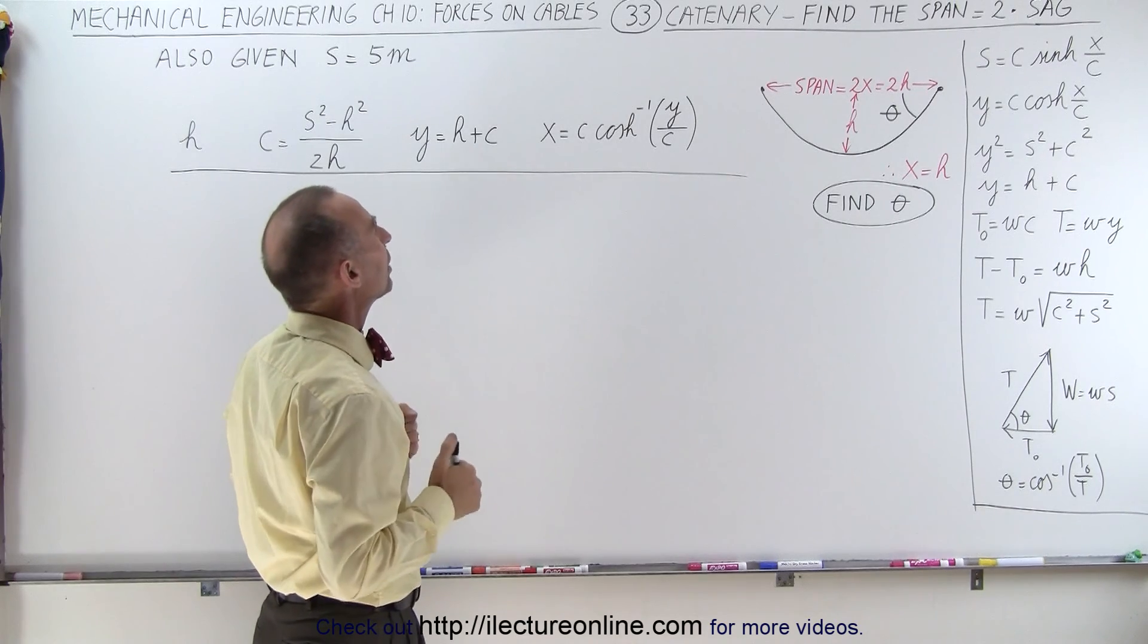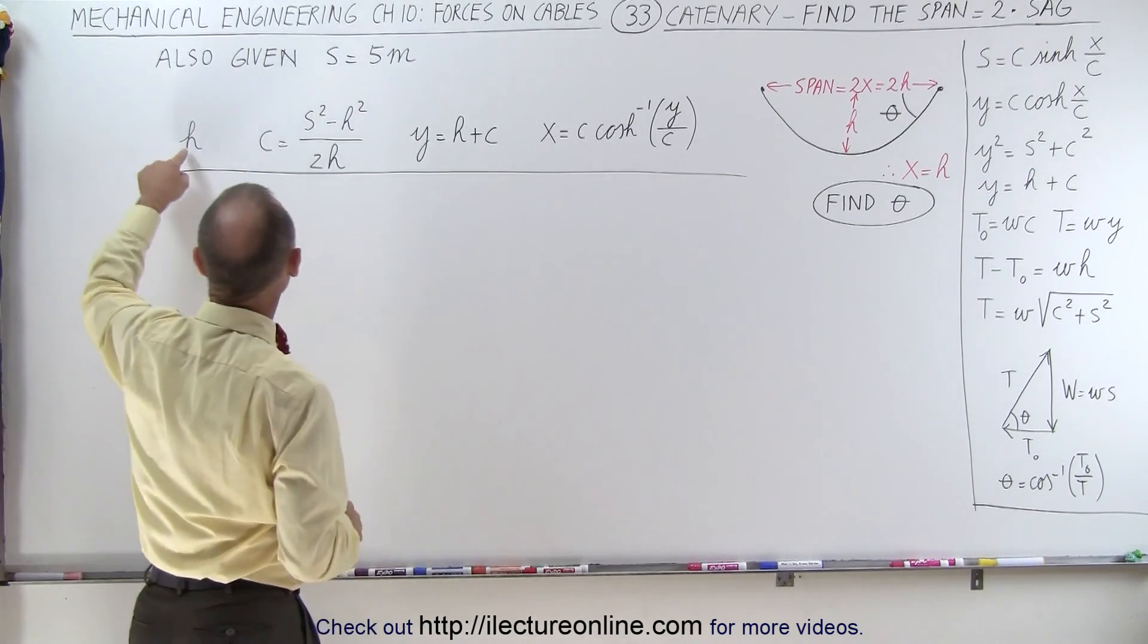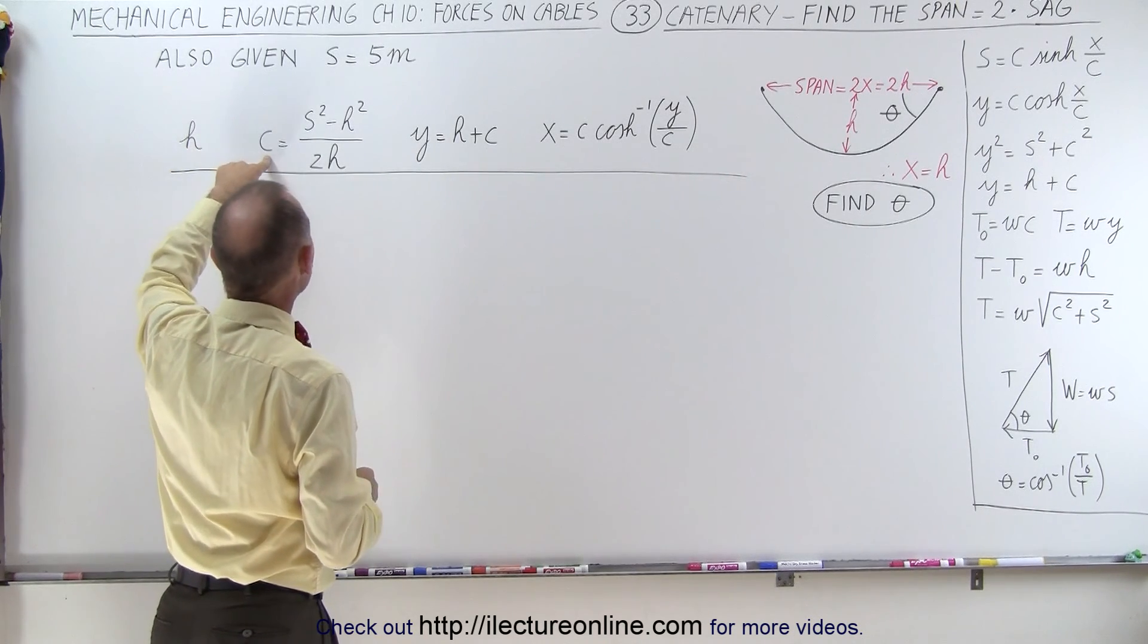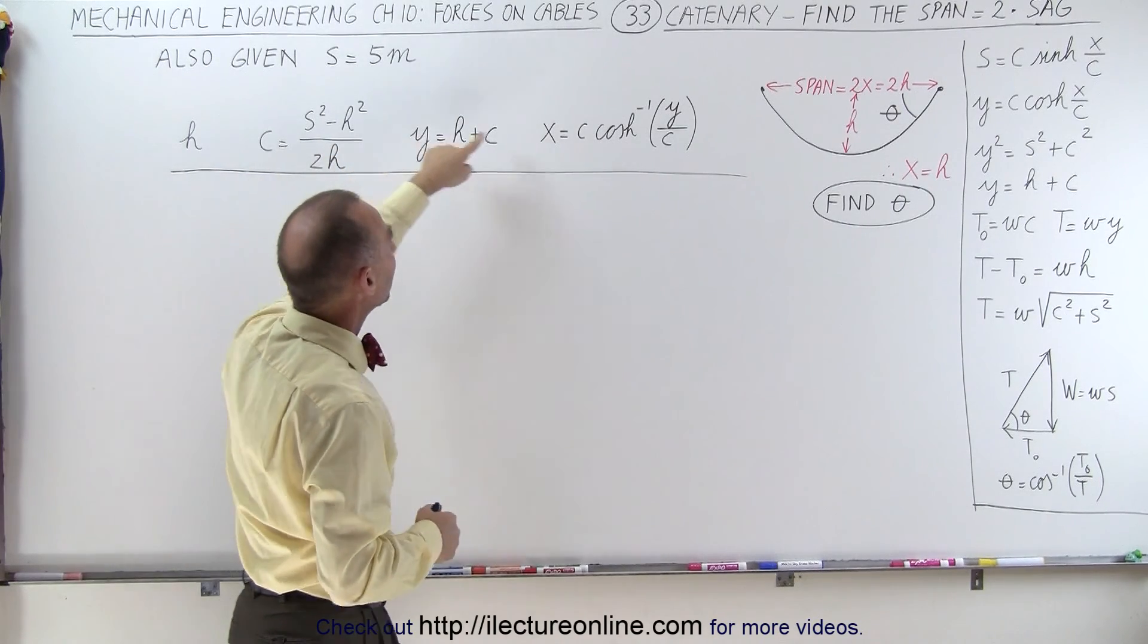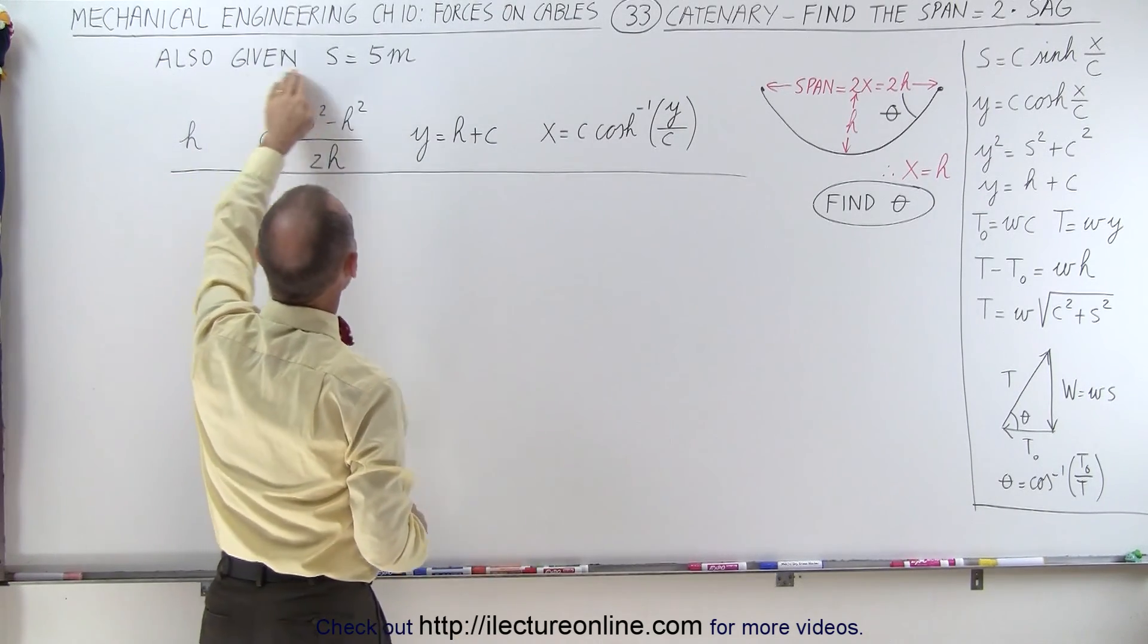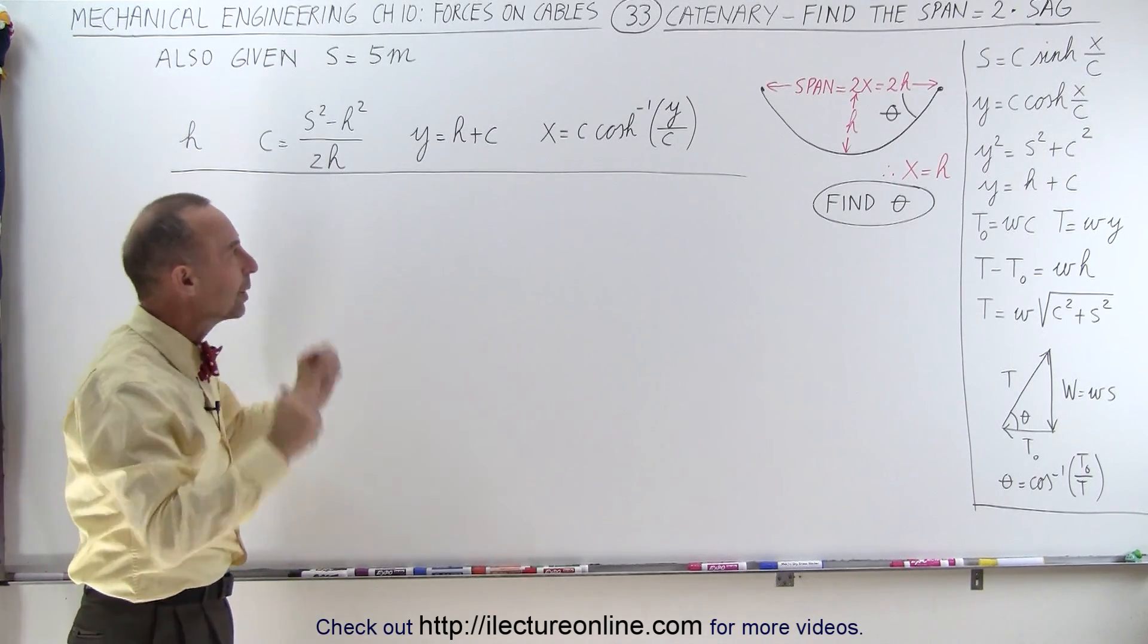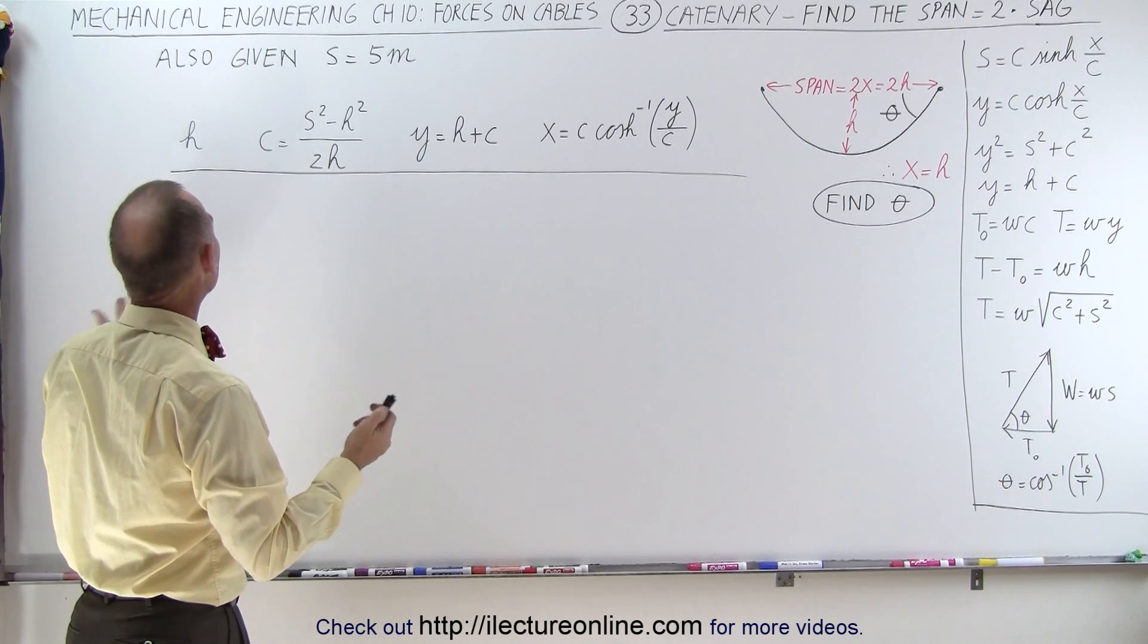So the following things we need to do is given that x equals h, we're going to plug in some values for h, some trial values, we calculate the appropriate c, we calculate y, and then we calculate x. Remember that these two values must be the same. We're also given that s is 5 meters, so that the total length of the cable between the attached points would be 10 meters.